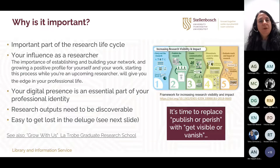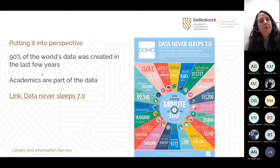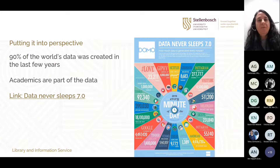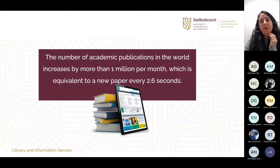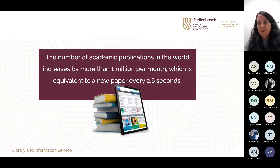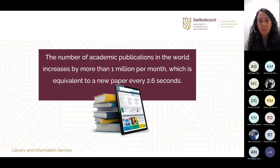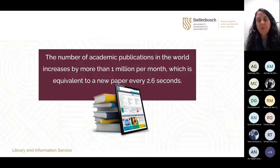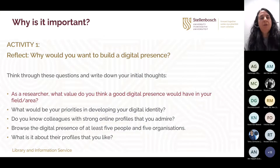Just some perspective about all the data out there in the world: 90% of the world's data was created in the last few years, and this is just growing every day. Academics are part of this data. The number of academic publications worldwide increases by more than 1 million per month — that's a new paper every 2.6 seconds. That's why it's so important to make your work more visible, because it takes effort from your side to do that.